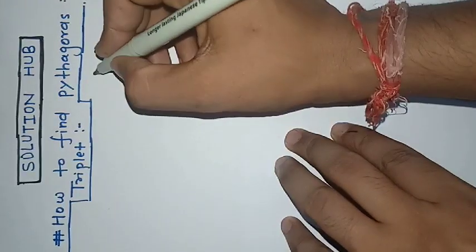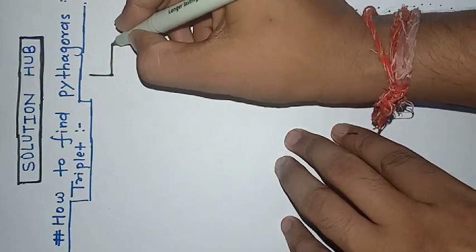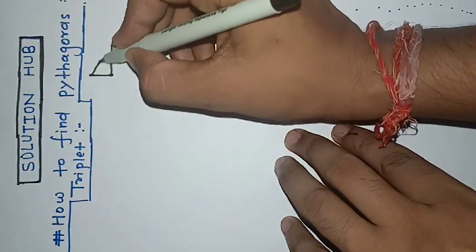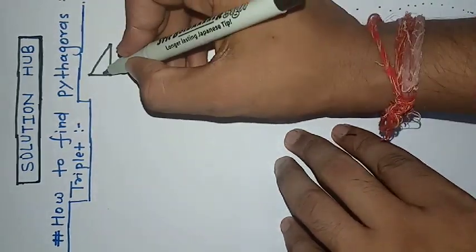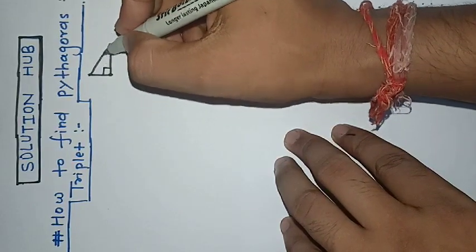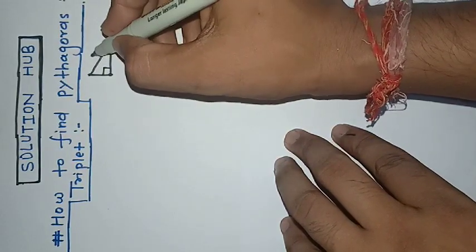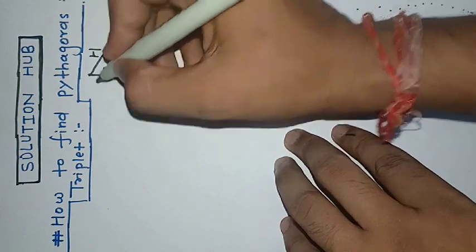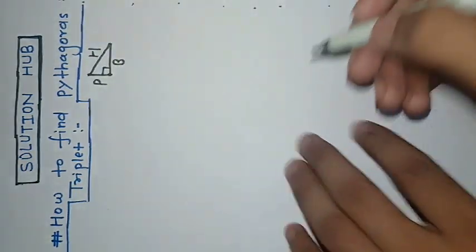Pythagorean triplet means you know that Pythagoras gave the Pythagorean theorem, and it's applied in a right angle triangle where one angle is 90 degrees. We have the hypotenuse, the perpendicular, and the base.